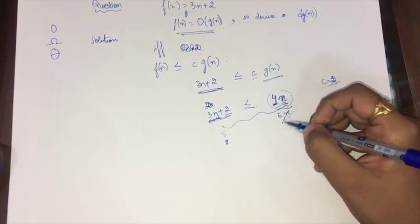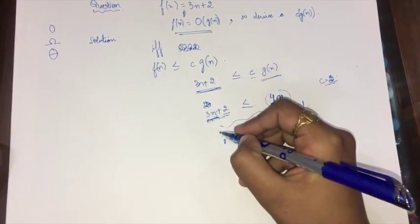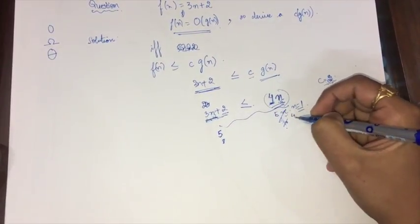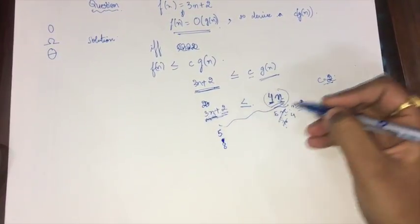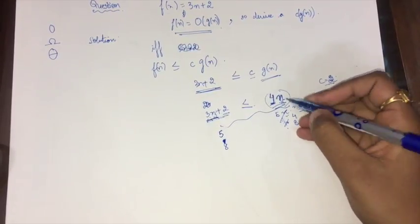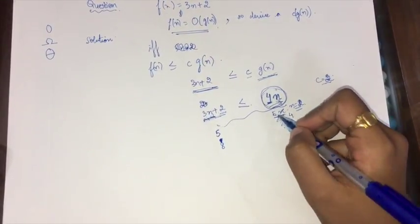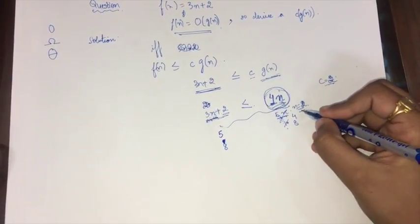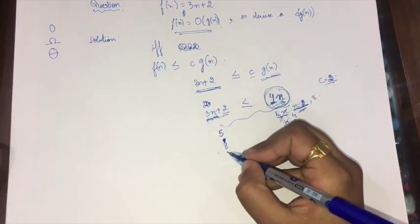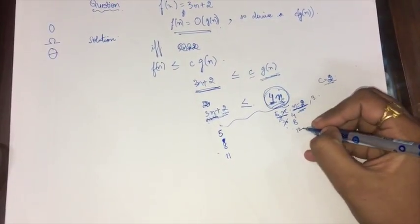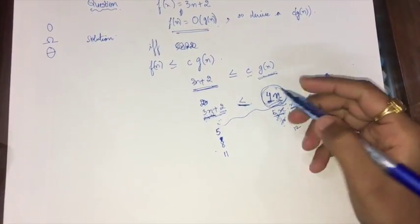Now let me check c = 4. For n = 1: 3×1 + 2 = 5, and 4×1 = 4 — that does not satisfy. For n = 2: 3×2 + 2 = 8, and 4×2 = 8 — they are equal, so the condition is satisfied. I try to take the minimum value for g(n), so I use 4n. For n = 3: 3×3 + 2 = 11, and 4×3 = 12 — the right side is greater, which is what I require.